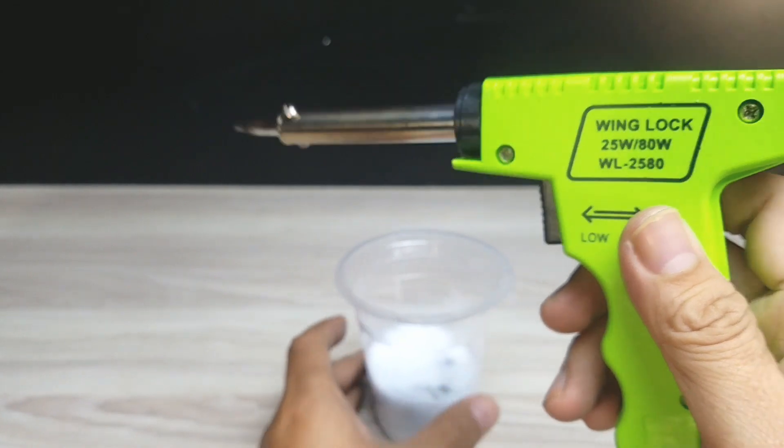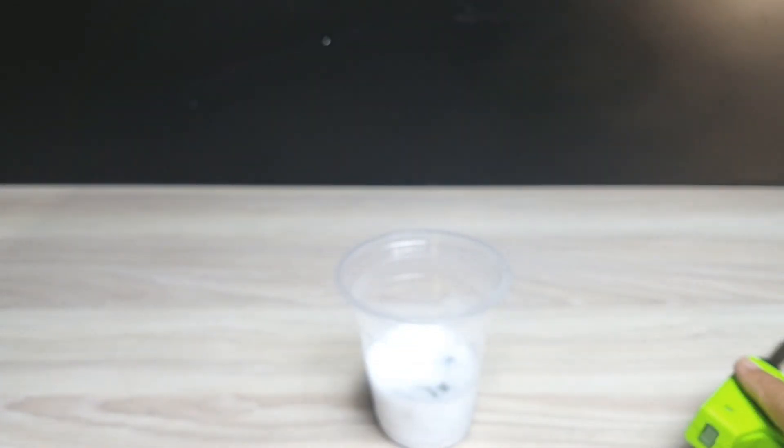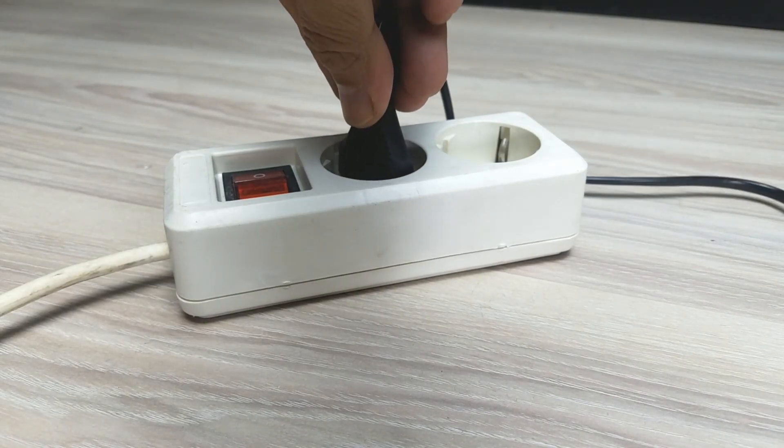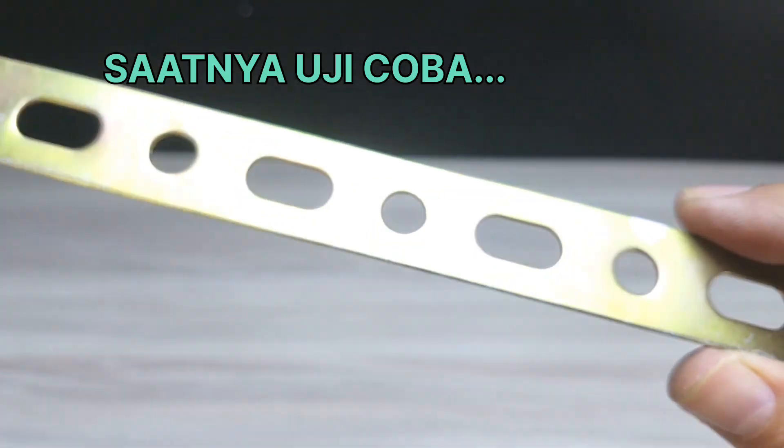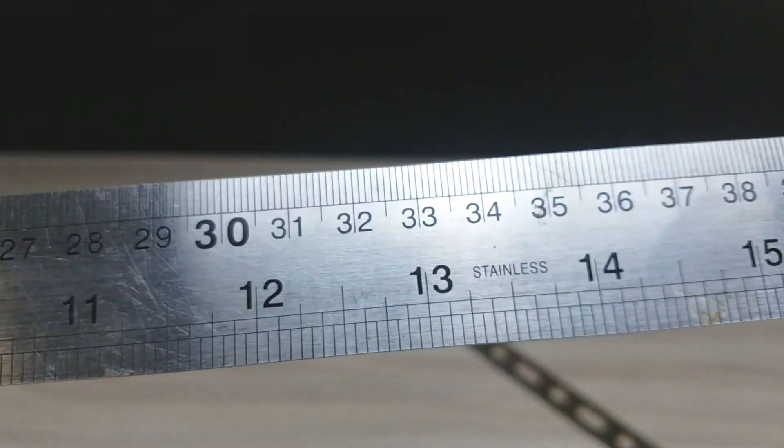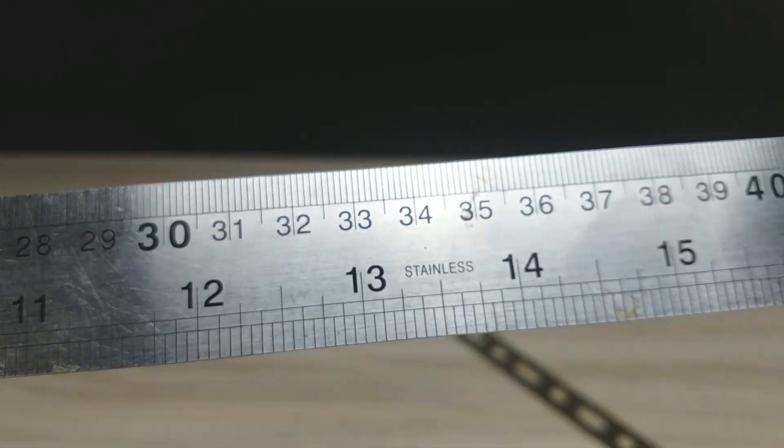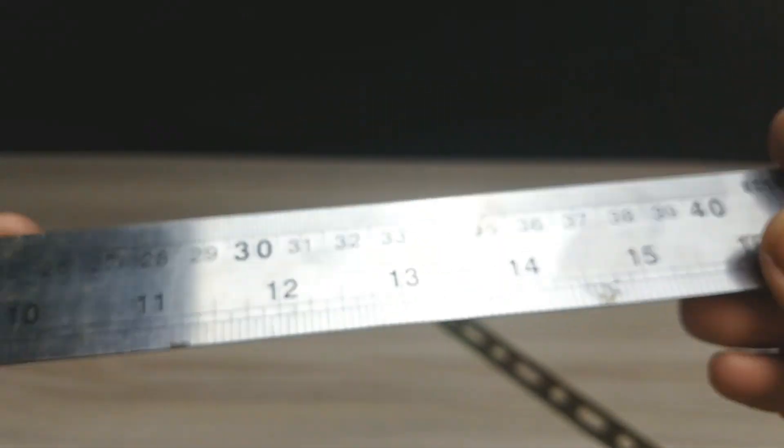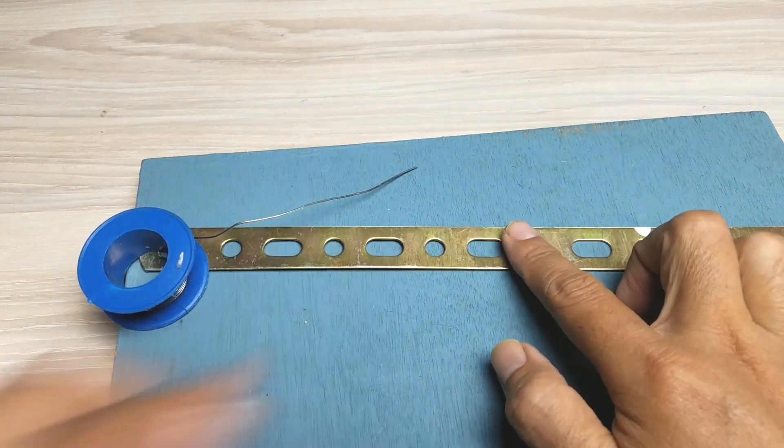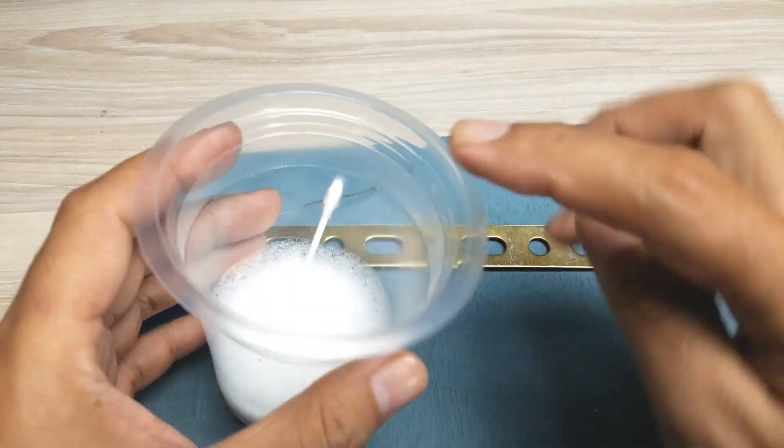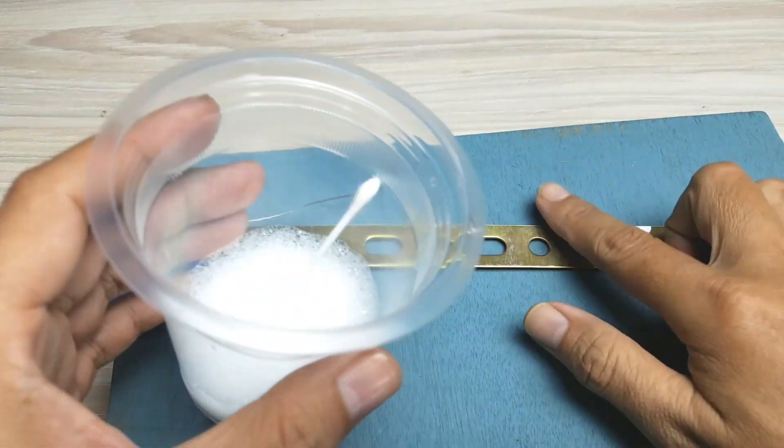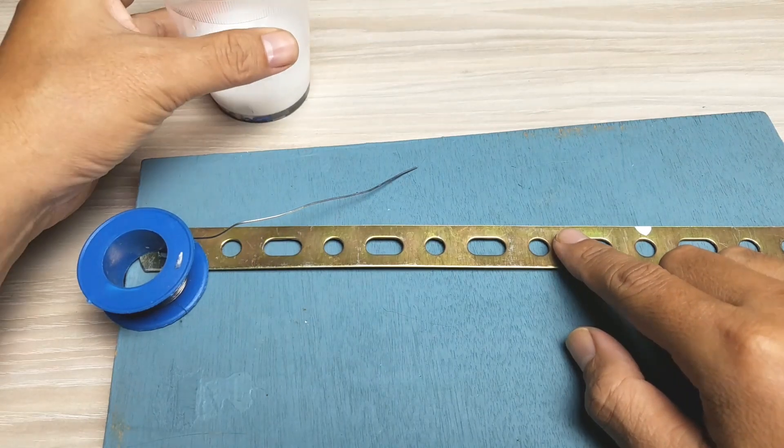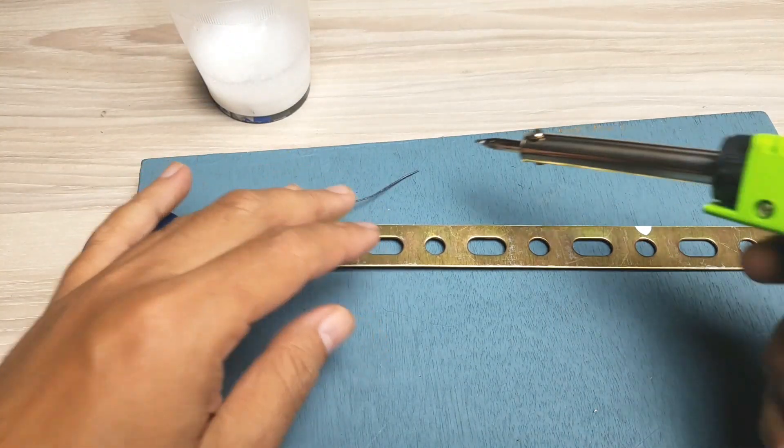Teman-teman langsung saja kita tes ramuan flux ini. Ini kita menggunakan bahan besi dan stainless. Ini ada penggaris stainless teman-teman ya untuk uji coba saja sebagai contoh. Yang pertama di bahan besi. Nanti kita akan menggunakan cotton bud saja seperti ini dan ini kita akan tes dulu tanpa menggunakan flux.